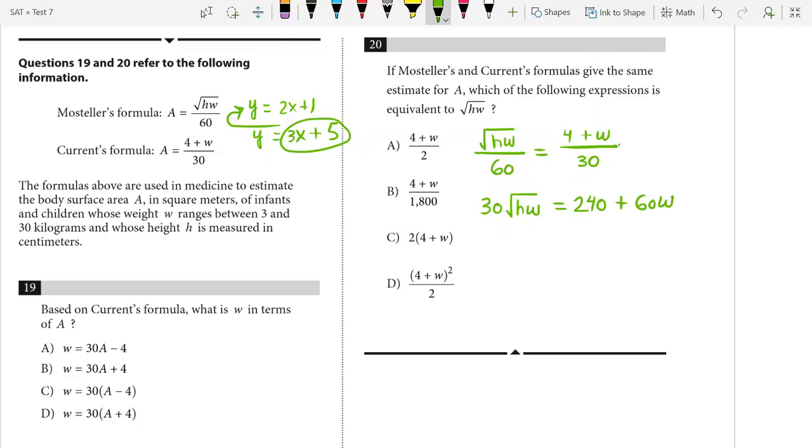When I divide both sides by 30, I get the square root of HW equals... 240 divided by 30 is, sorry, just 8. And then 60W divided by 30 is 2W.